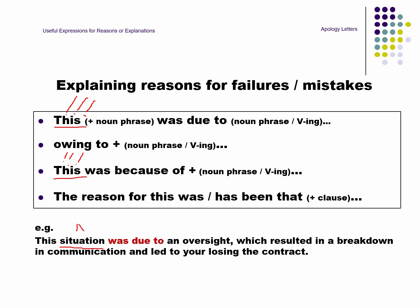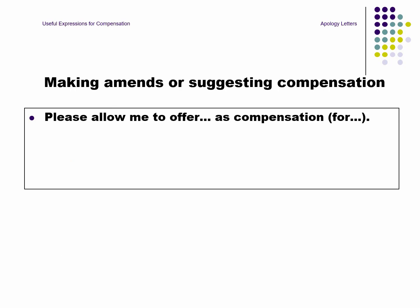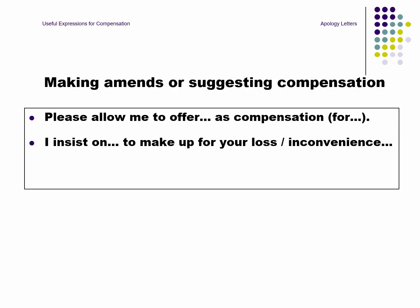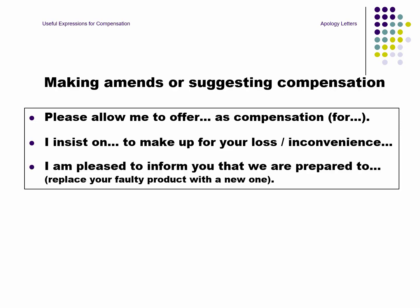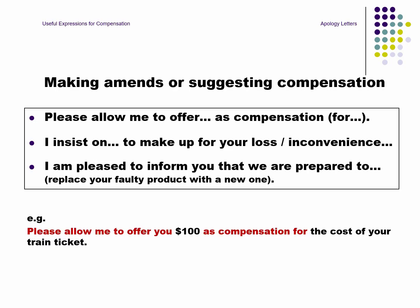In order to make amends or suggest compensation, you can use: 'Please allow me to offer... as compensation for...' or 'I insist on...' To make up for the loss or inconvenience, you can write: 'I am pleased to inform you that we are prepared to...' For example, if you offer 100 dollars as compensation: 'Please allow me to offer you 100 dollars as compensation for the cost of your train ticket.'